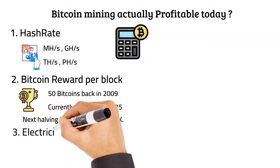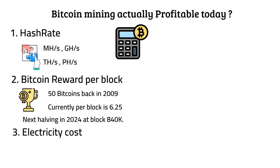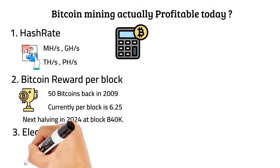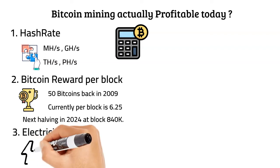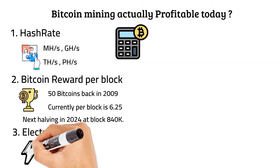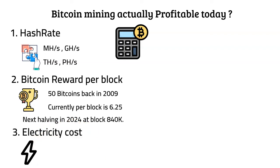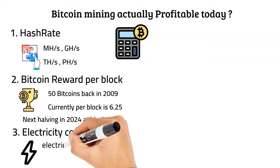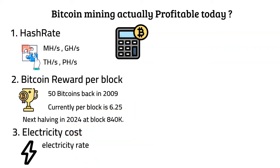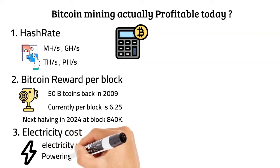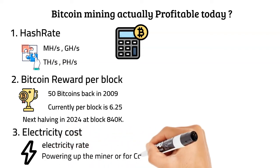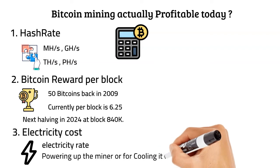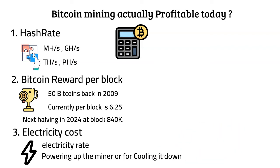Number 3: Electricity cost. How many dollars are you paying per kilowatt-hour? You will need to find out your electricity rate in order to calculate profitability. This can usually be found on your monthly electricity bill. This is important because miners consume electricity, whether for powering up the miner or for cooling it down, as these machines can get really hot.